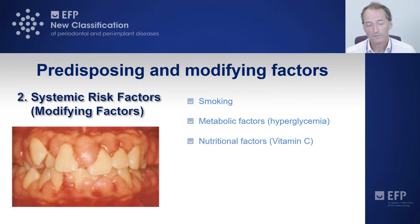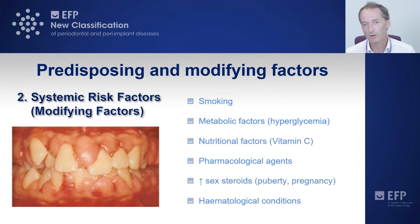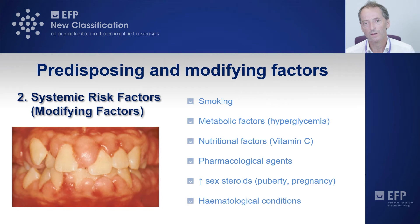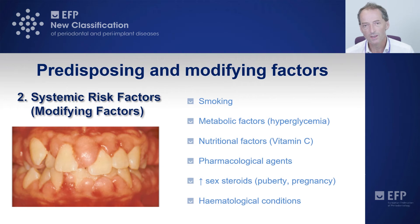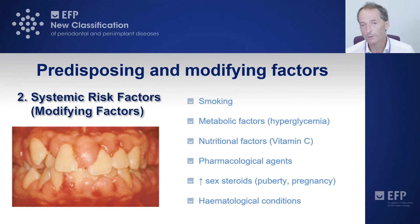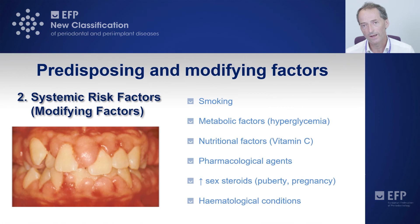Our systemic risk factors or modifying factors are characteristics of an individual that affect the rate of progression or character of the inflammation — they don't necessarily trigger that inflammation. Classically these include smoking; metabolic factors such as high sugar intake or hyperglycemia; nutritional factors such as reduced micronutrient levels like vitamin C; various drugs or pharmacological agents; elevations in sex steroid hormones during puberty, pregnancy, or with certain oral contraceptive pills. These can affect the inflammatory response in pre-existing gingival inflammation, as can various haematological conditions.